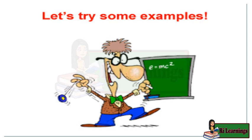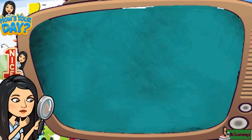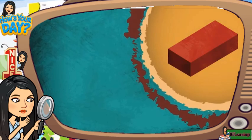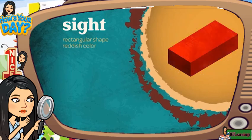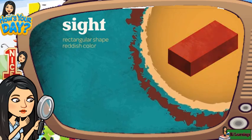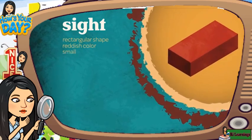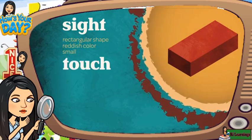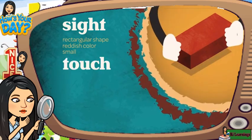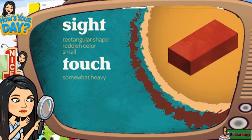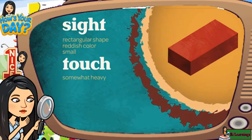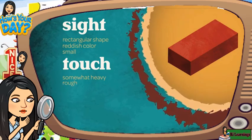Let's try some examples. Take this object for example. You can use your sense of sight to see its shape and color — it has a rectangular shape and a reddish color. You can also see the size of the object. You can use your sense of touch to help you observe the object's texture and weight. This object is light enough to pick up, but it would feel rather heavy in your hands. Texture is how the surface of an object feels. The surface of this object feels rough.